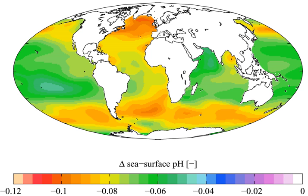Under normal conditions, calcite and aragonite are stable in surface waters since the carbonate ion is at supersaturating concentrations. However, as ocean pH falls, the concentration of carbonate ions required for saturation to occur increases, and when carbonate becomes undersaturated, structures made of calcium carbonate are vulnerable to dissolution. Therefore, even if there is no change in the rate of calcification, the rate of dissolution of calcareous material increases. Corals, coccolithophore algae, coralline algae, foraminifera, shellfish and pteropods experience reduced calcification or enhanced dissolution when exposed to elevated CO2.